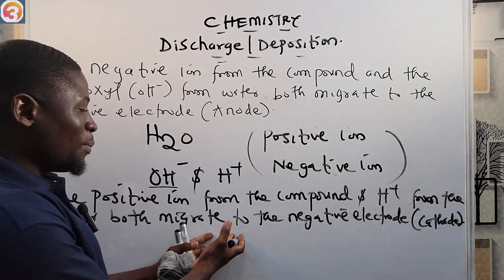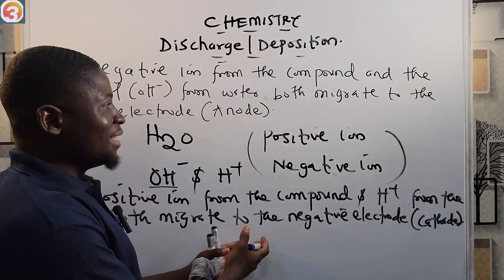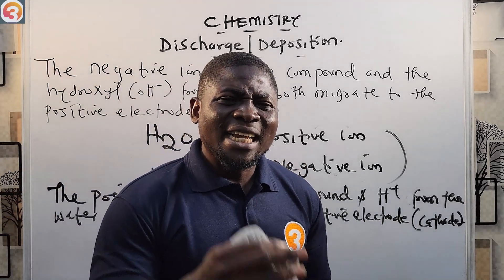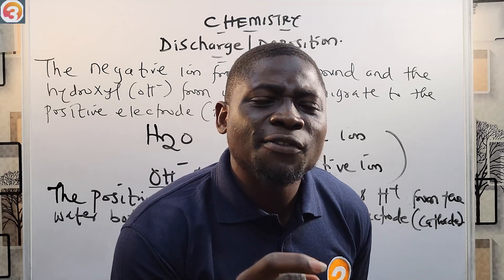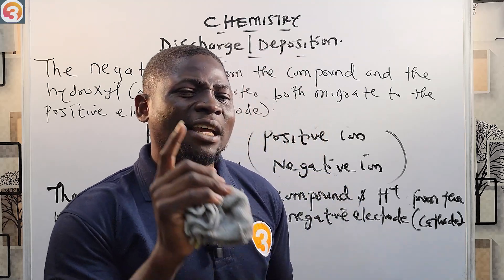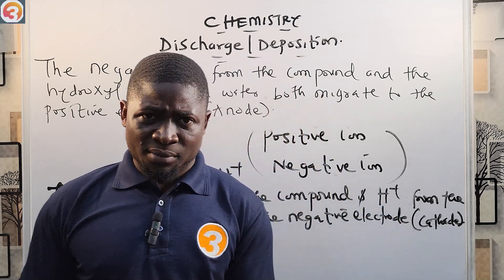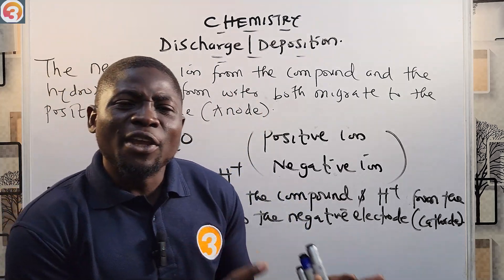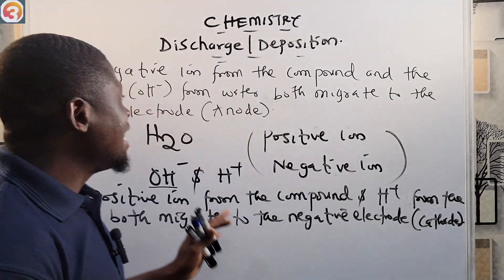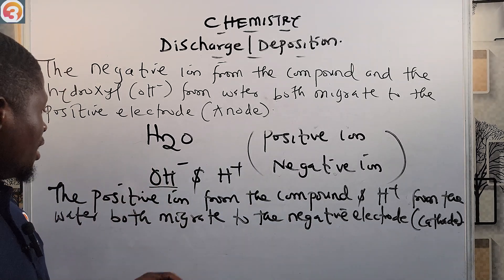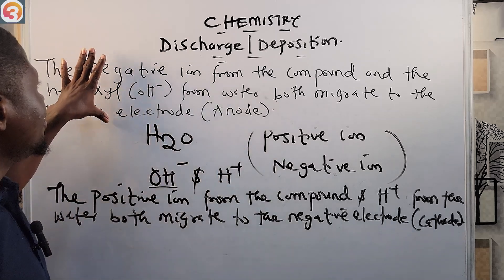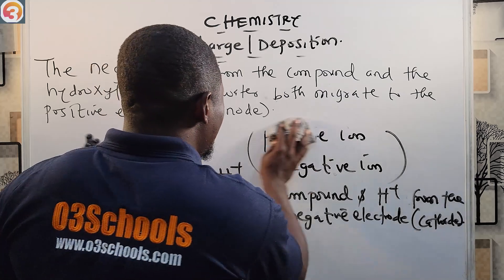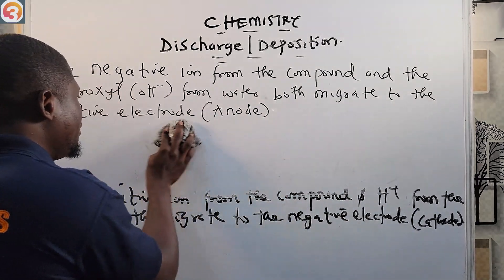Now, once they are at the electrodes — positive ions at the cathode, negative ions at the anode — the ion that has a preference for discharge is discharged, while the other ions remain in the solution.